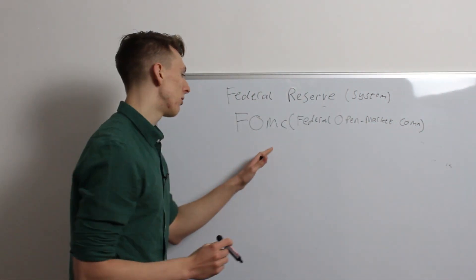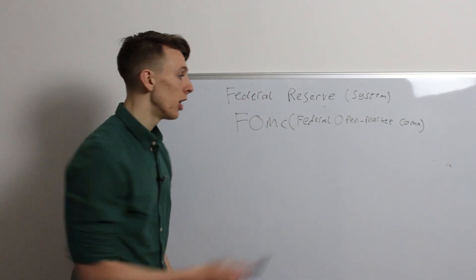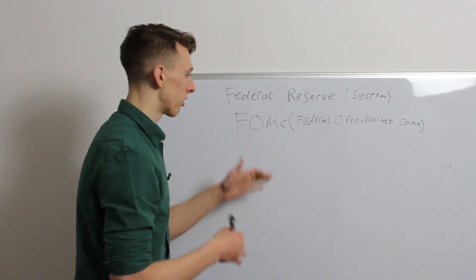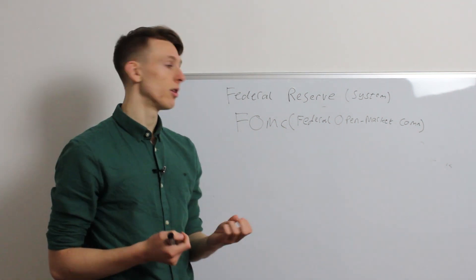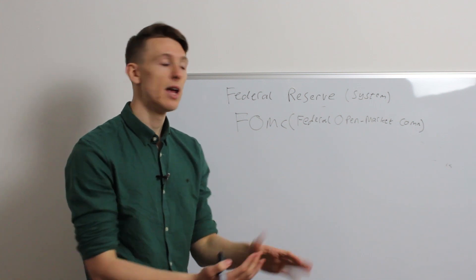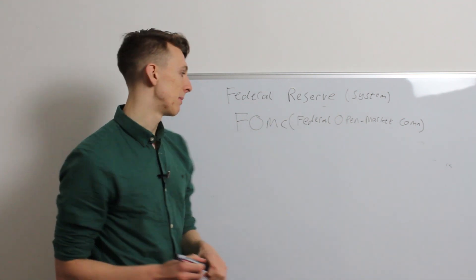So, the Federal Open Market Committee, the Federal comes from the Federal Reserve. Open market, because what this committee does, whenever the committee wants to try and change that target rate, what they'll do, is they'll commit to what we call open market operations. And I'll talk about those in a second. Committee, because those are the people on it.